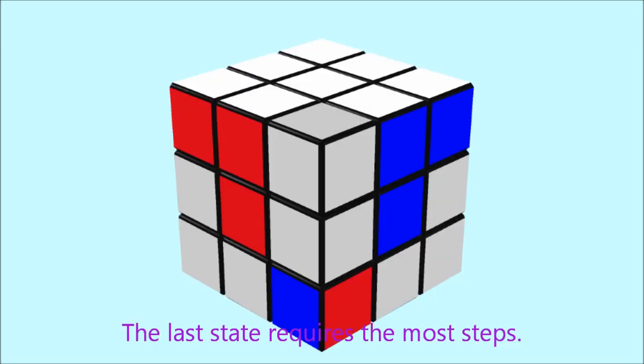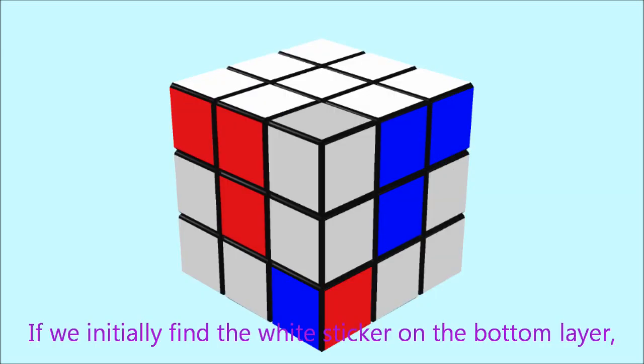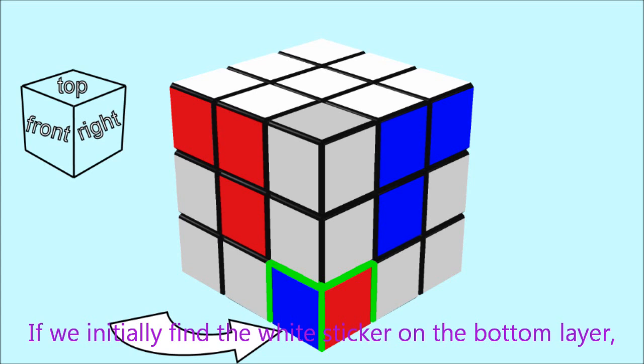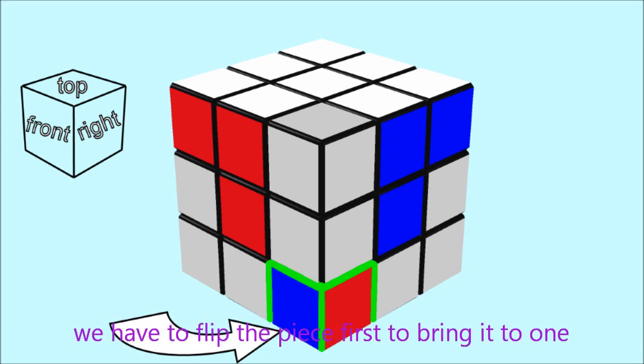The last state requires the most steps. If we initially find the white sticker on the bottom layer, we have to flip the piece first to bring it to one of the side layers and solve it with one of the first two methods.